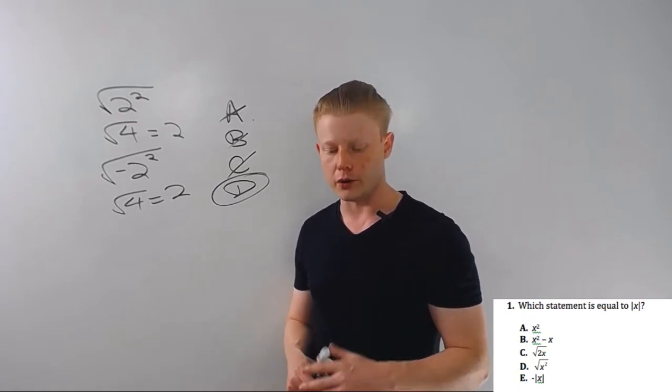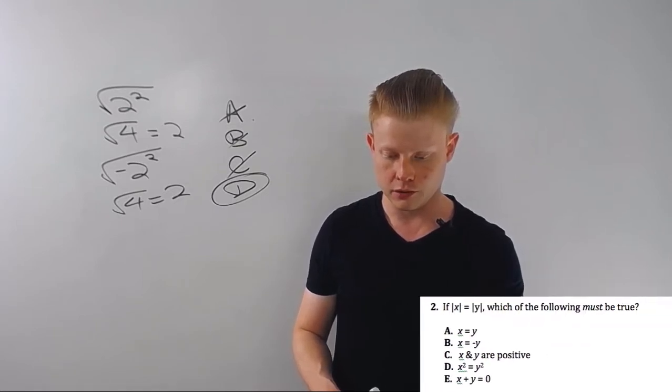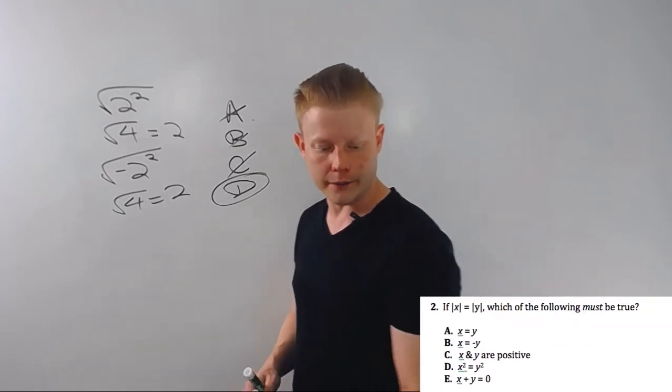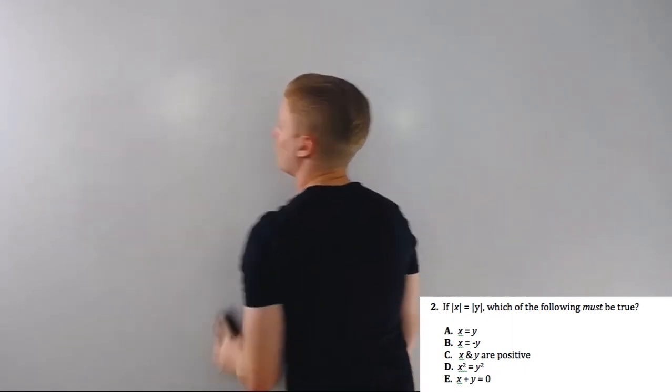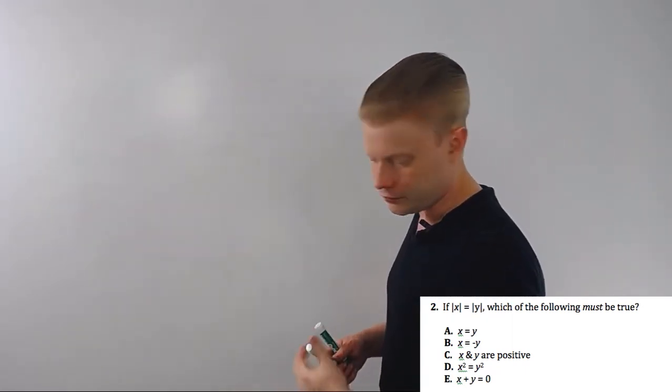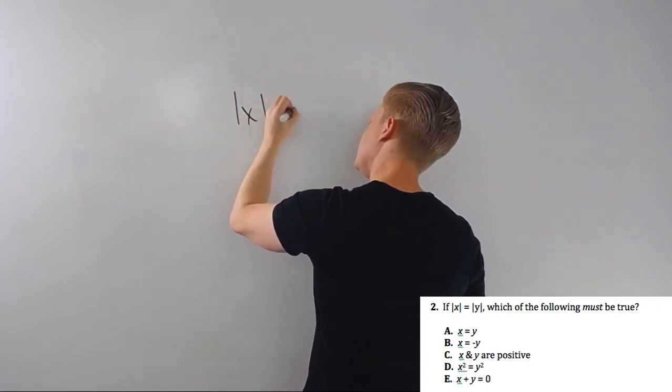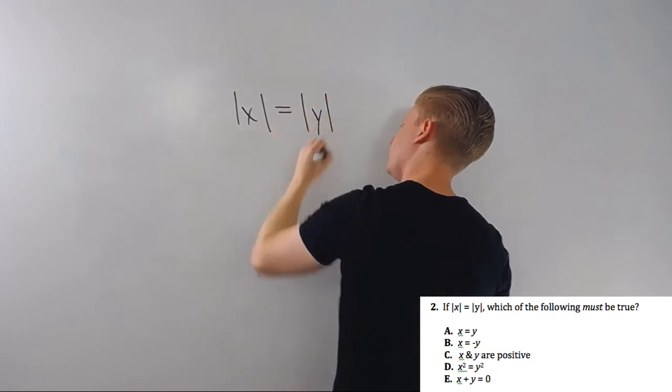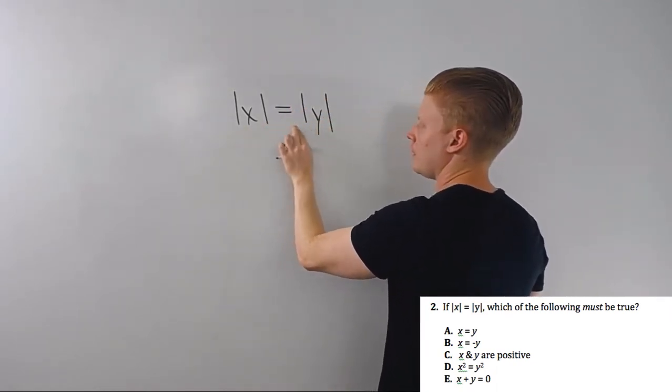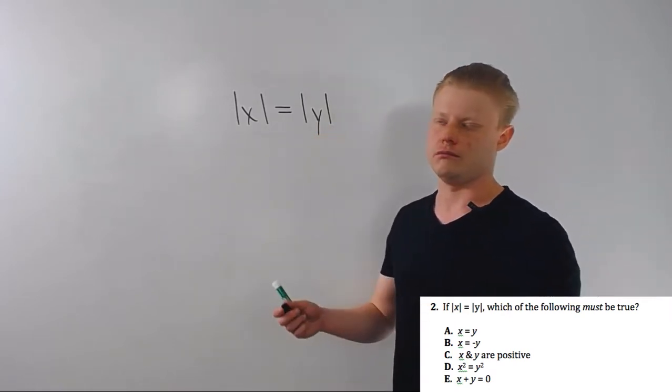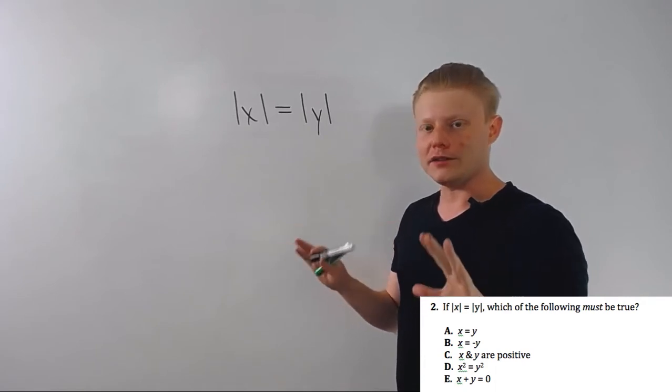That's how we make things positive. So that one works. That's a classic definition question. And of course if we look at E, E doesn't really make any sense. That's just going to be like the negative of all the absolute values. It doesn't really work. Let's look at our second question if I can get it pulled up here. If absolute value of x is equal to absolute value of y, what must be true?